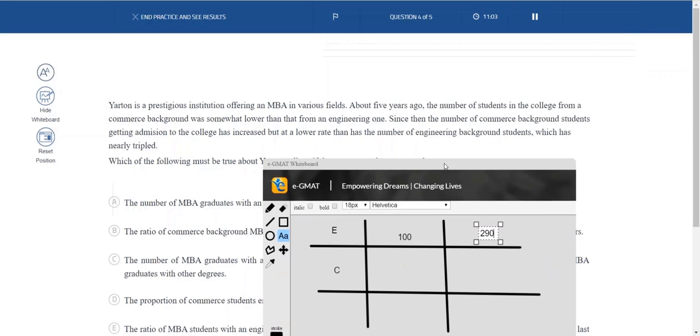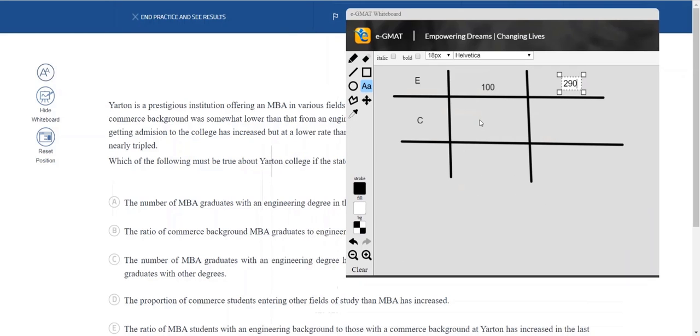And what do we know about the commerce students? Somewhat lower than the engineering initially, right? So let's put 80, and this number has increased, but not by the same margins. So let's say it's doubled. Engineering is nearly tripled, let's say this one has doubled.